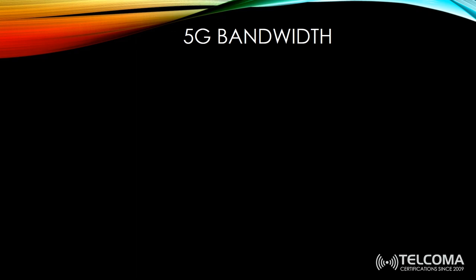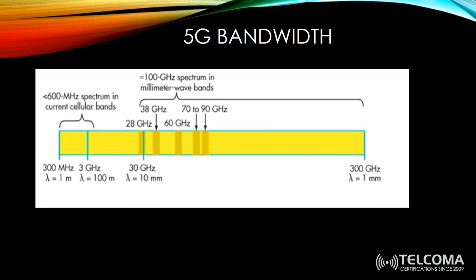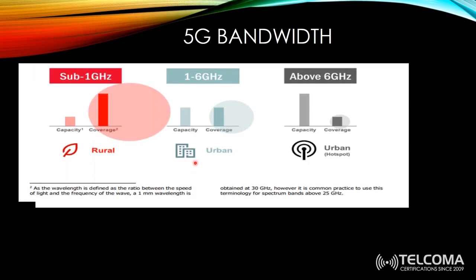5G bandwidth will be very wide, and it depends on the operator, the country, and the services and areas to be covered. We can use frequencies starting from 300 MHz up to 300 GHz. The most common frequency practically used by operators is 3.5 GHz. Millimeter waves above 24 GHz include unlicensed spectrum that can also be used.